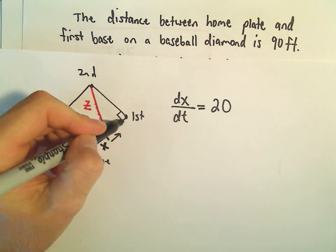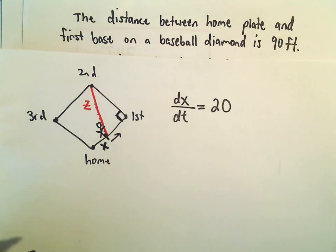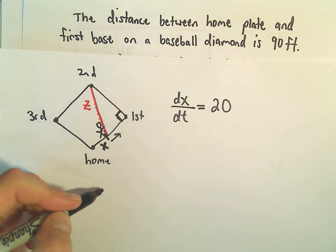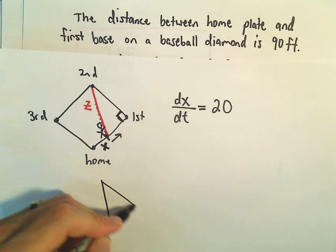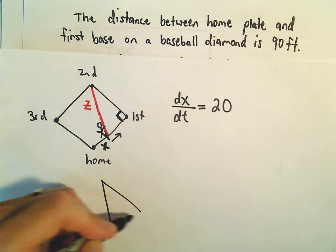So notice we're kind of getting a nice little right triangle here. And our right triangle, if you think about it, so here's our z, make a slightly bigger picture.